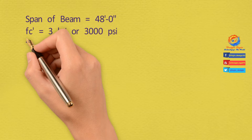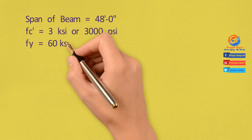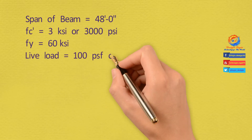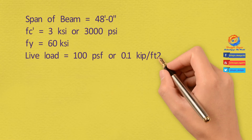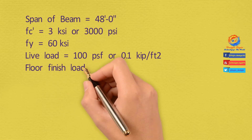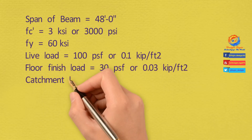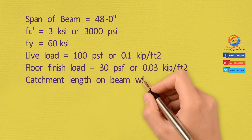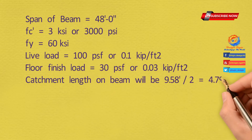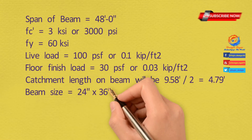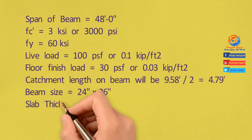Concrete compressive strength Fc is equal to 3 ksi or 3000 psi. Reinforcement yield strength Fy is equal to 60 ksi. Since this is a masjid, live load acting on floor is 100 psf or 0.1 kip per square foot. Floor finish load is 30 psf or 0.03 kip per square foot. Catchment length is already calculated as 4.79 feet. I am using beam size of 24 inches by 36 inches. This was one-way discontinuous slab from both sides.